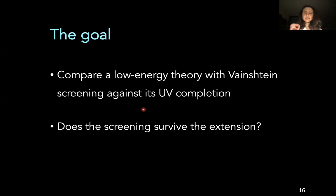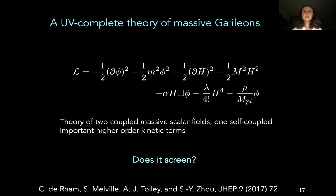So then this is our goal. To take a theory with Vainshtein screening and compare it against its UV completion, one of its potential UV completions, to see if the screening survives this extension. UV complete theories are not exactly easy to come by. But fortunately for us, a few years ago, these people produced a theory that's very good for what we need. This is a theory of two coupled massive scalar fields, one of which is self-coupled. And as you can see, there are important higher order kinetic terms. Now, this is a good theory because you can look at the low energy limit, see if it screens, see if the UV complete theory screens, see if they look anything like each other.